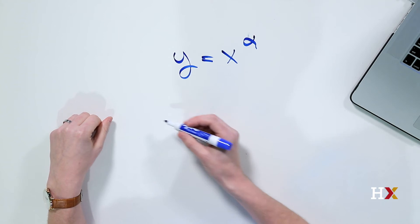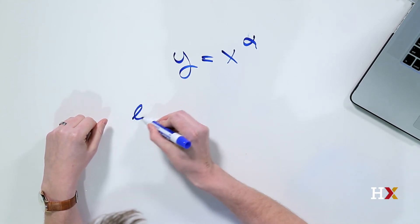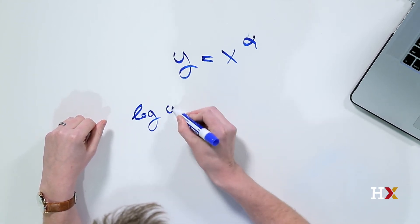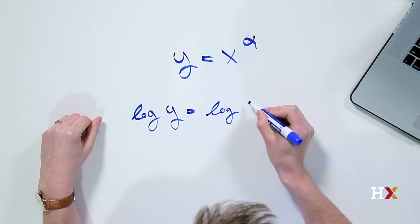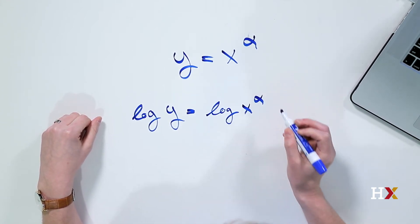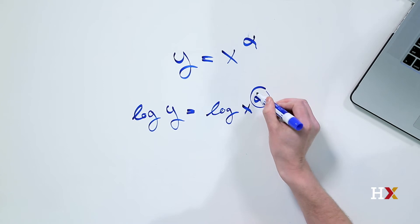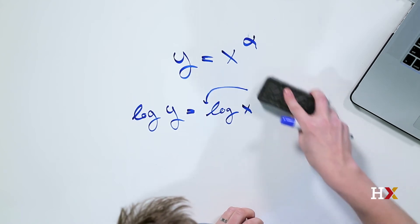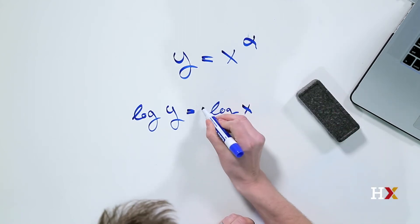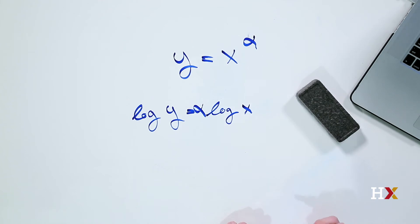We're first going to take logs of both sides, which gives us log of y is equal to log of x to alpha. You may remember that in the logarithm, we can pull the exponent here to the front of the expression. Let's do just that, in which case we end up with alpha being at the front.